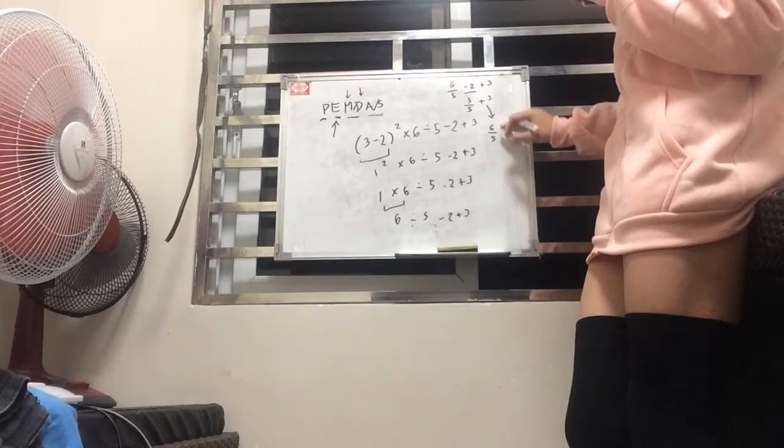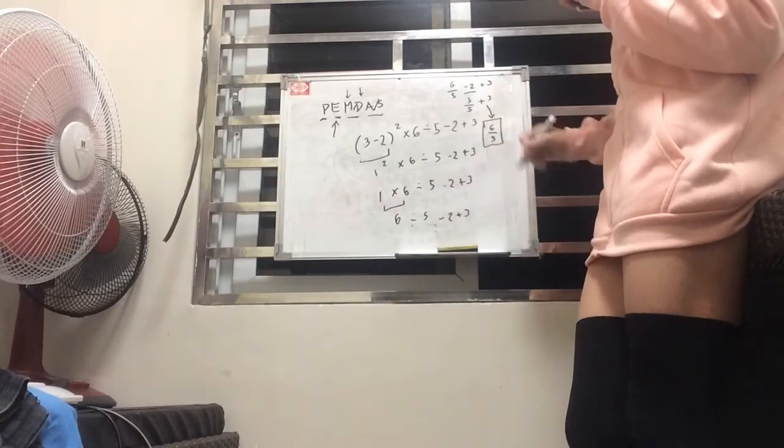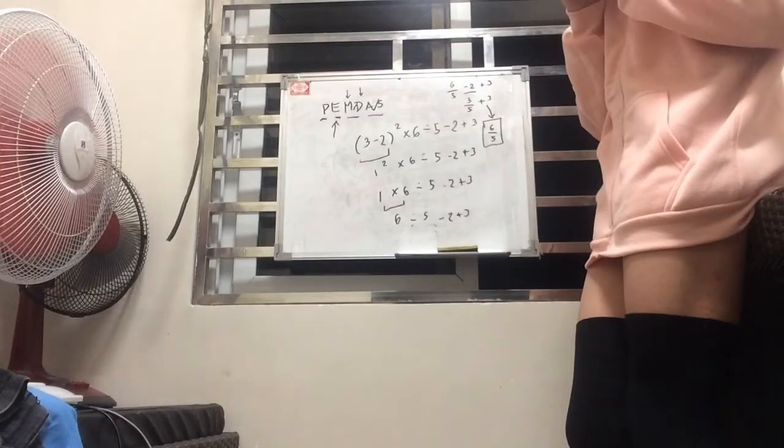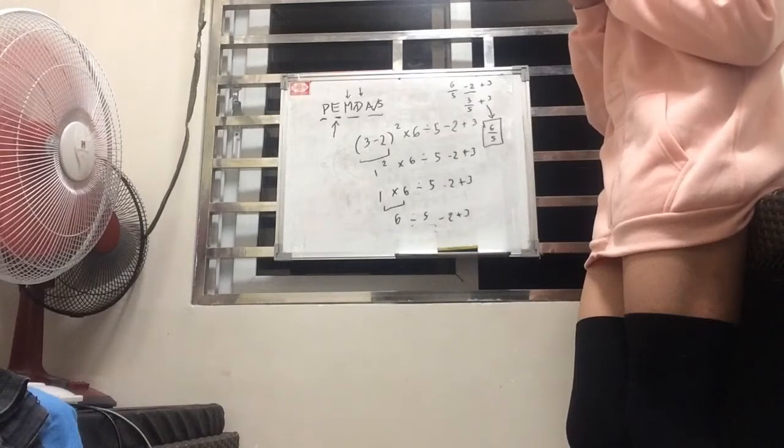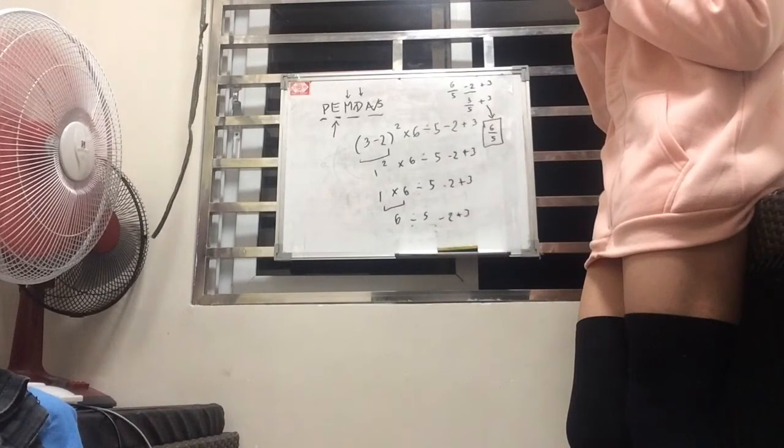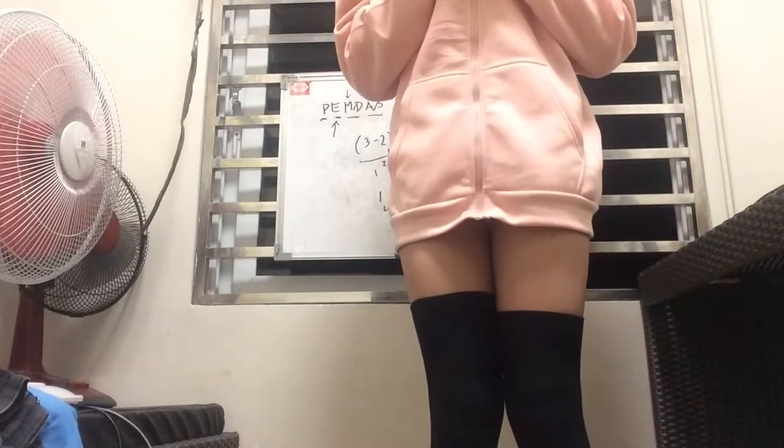Now, 5 and 6 doesn't have a common factor. So I believe that this is the final answer. So that's it for PEMDAS. So next episode, I'm going to be discussing some algebra. So I guess I'll see you then.